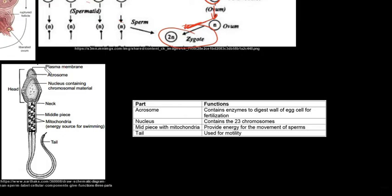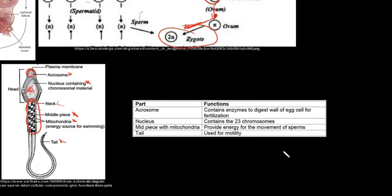Looking at the structure of a sperm cell, you need to be able to draw the acrosome, the nucleus, the mid piece with mitochondria, and the tail. The acrosome at the top contains enzymes that digest the wall of the egg cell to allow fertilization. The nucleus contains the genetic material - specifically 23 chromosomes. The mid piece contains mitochondria that provide energy for sperm movement. The tail is used for motility, which is how sperm cells move.